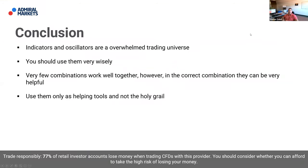Let's make a conclusion. Indicators and oscillators are all over the trading universe. Use them very wisely and use very few. Very few combinations work well together; however, in the correct combination — like Heikin Ashi, RSI divergences, and price — they can be very helpful. Use them only as helping tools, not as the Holy Grail.